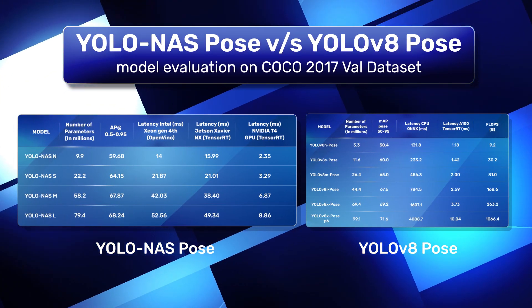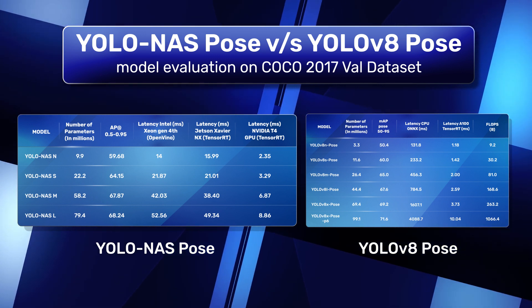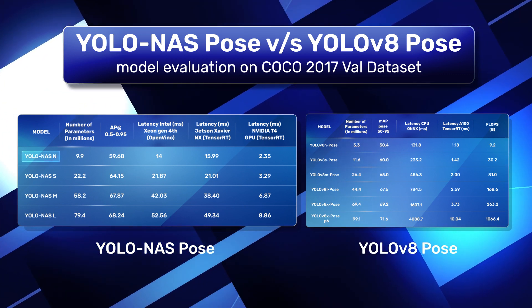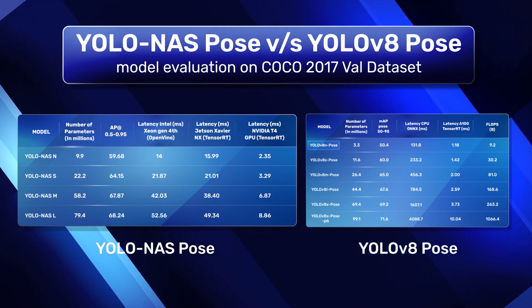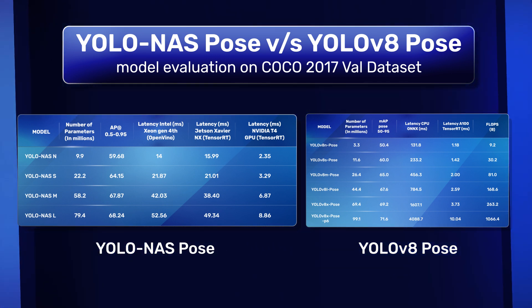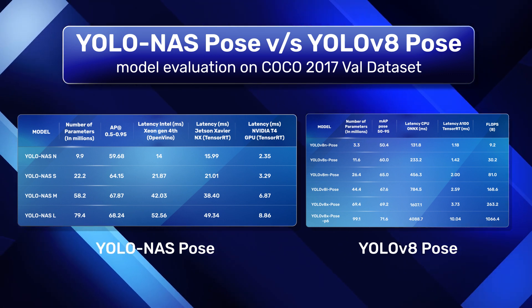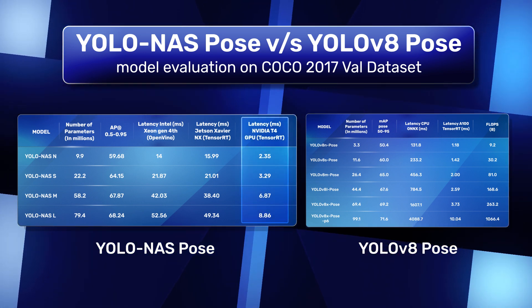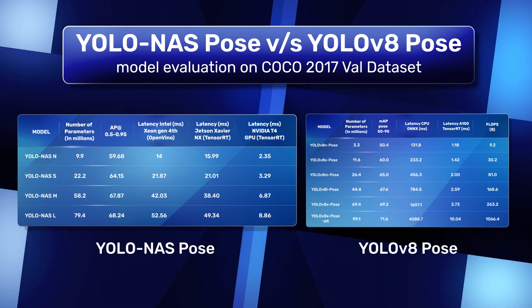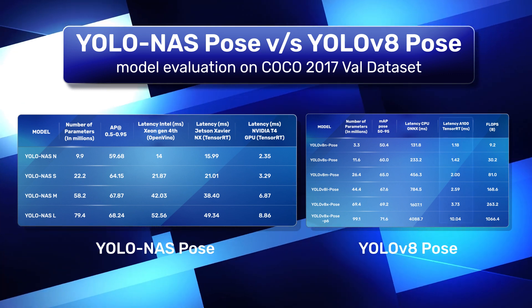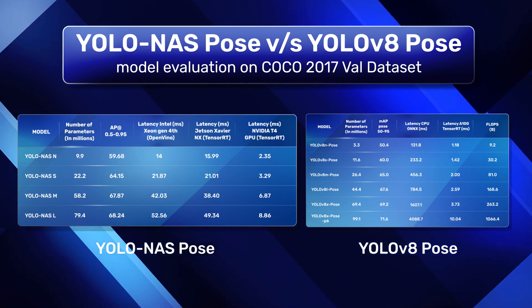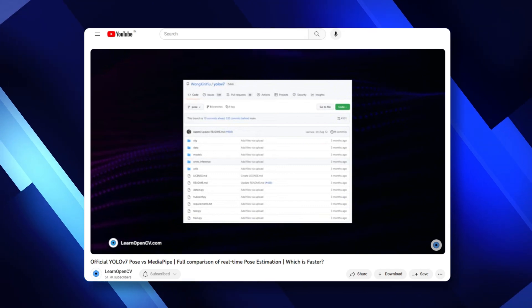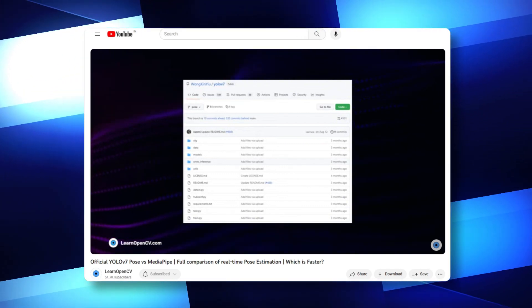The NAS and V8 COCO evaluation figures are not directly comparable. The number of model parameters for NAS and V8 are not the same — for example, the NAS Nano model has 9.9 million parameters, whereas the V8 Nano model has just 3.3 million, one third of NAS. The inference hardware used is also different: NAS runs on NVIDIA T4 GPU (launched September 2018), while V8 runs on NVIDIA A100 GPU (launched May 2020). Let us know in the comments if you would like a comparative analysis of YOLO NAS Pose Models and V8 Pose Models.